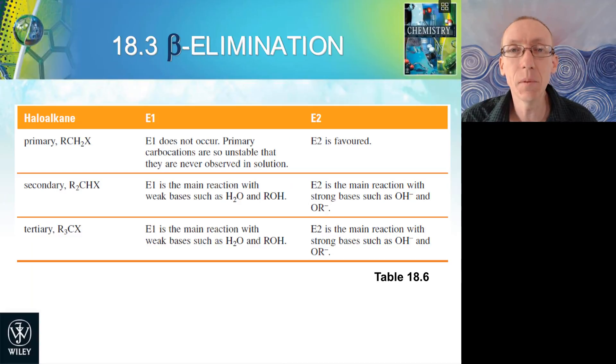So similar to substitution reactions, we can see some general trends in terms of which types of reagents favor which pathway. So with a primary alkyl halide, we don't get E1 reaction mechanisms because they go via a carbocation, and we know that primary carbocations are very unfavored. So the E2 elimination mechanism is favored when we have a primary alkyl halide.